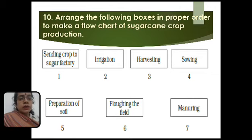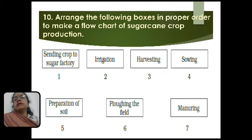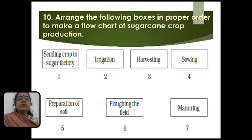We have already learned about the different steps to follow for crop production. Here the steps are arranged haphazardly and you have to write them in the proper order to make a flowchart. The boxes contain: sending crops to the sugar factory, irrigation, harvesting, sowing, preparation of soil, plowing the field, and manuring. You have to arrange them in the proper order.